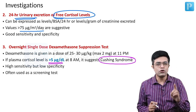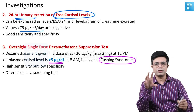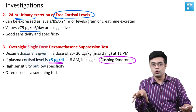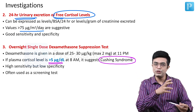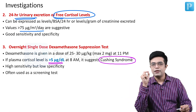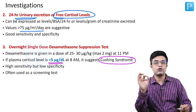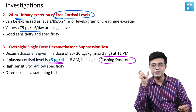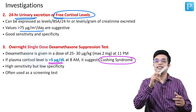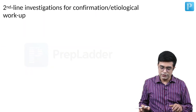Remember: Cushing syndrome and Cushing disease are not the same. Cushing syndrome includes all causes — pituitary and non-pituitary. When Cushing syndrome occurs specifically due to increased ACTH production from a pituitary adenoma, it is called Cushing disease. So Cushing disease is a type of Cushing syndrome.